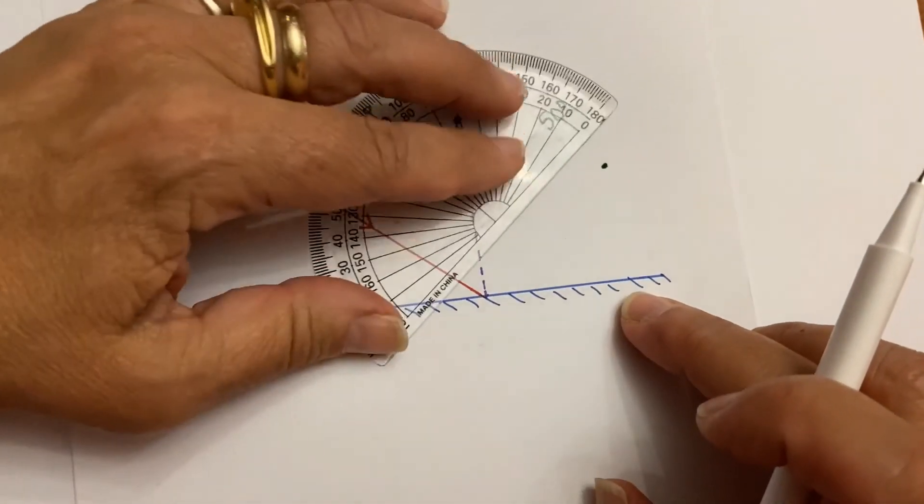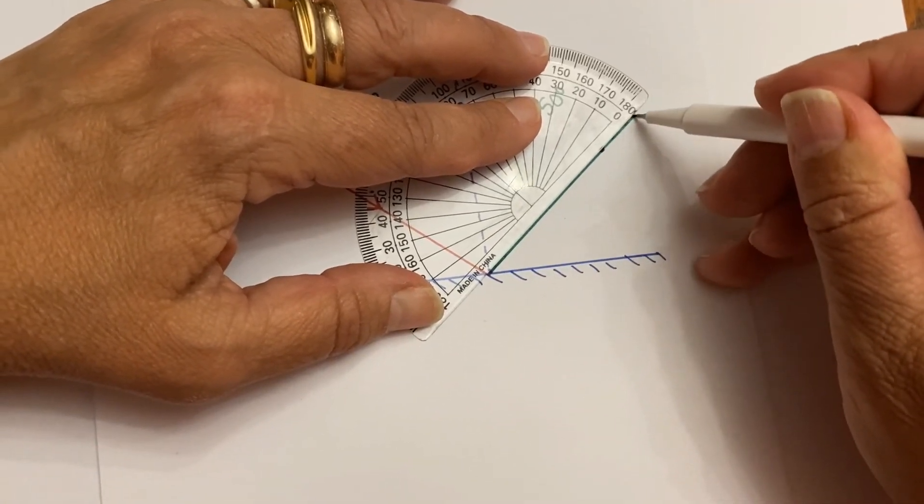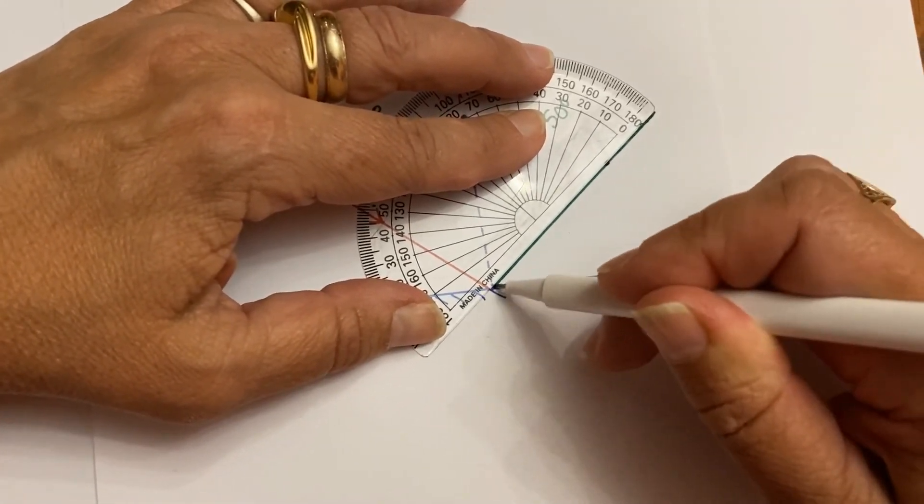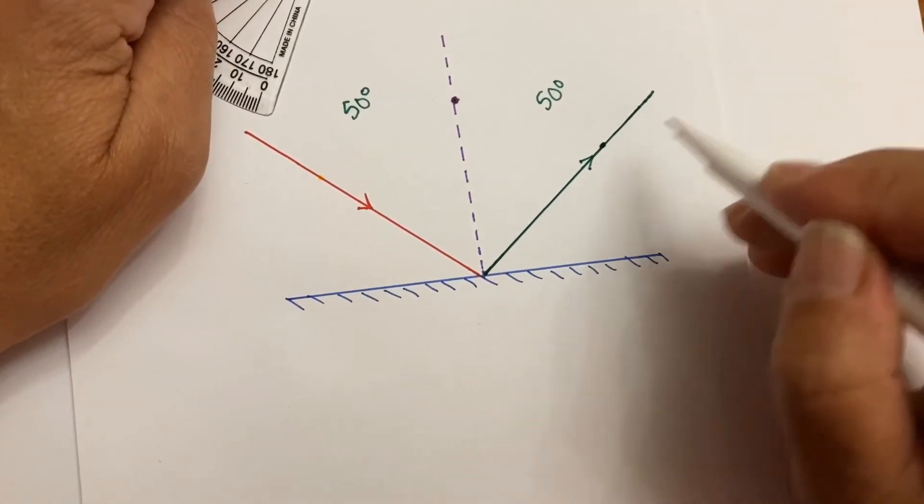And then we're going to draw the line for our reflected ray. It's a solid line coming out from the mirror, and we draw the arrow going out.